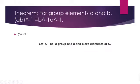So what is the proof? The proof is very simple. Suppose Z is a group and A and B are any two elements of that group Z.